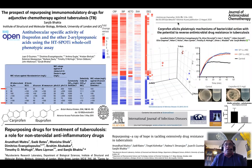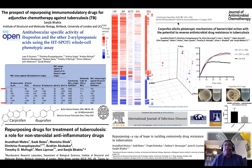A few years ago, serendipitously, we discovered carprofen to exhibit antitubercular-specific properties against replicating, non-replicating, and drug-resistant clinical isolates of MTB. Though the general antibacterial activity of NSAIDs has been reported independently, the mechanisms of their antibiotic action on Mycobacterium tuberculosis is still not fully understood.